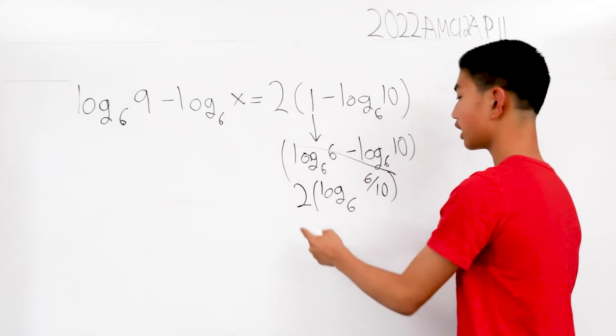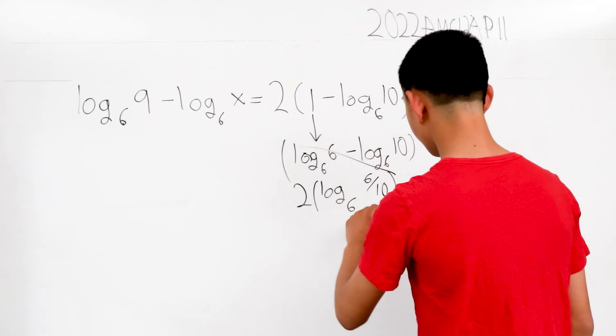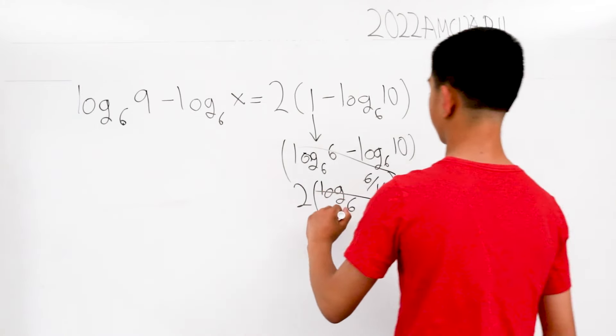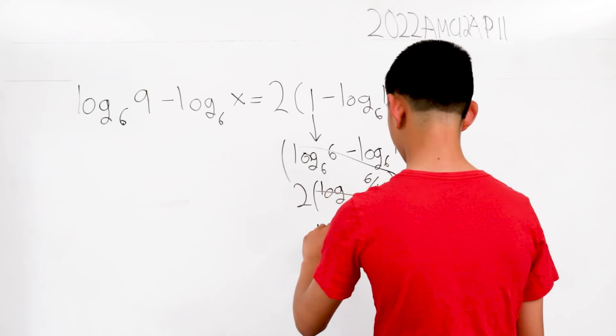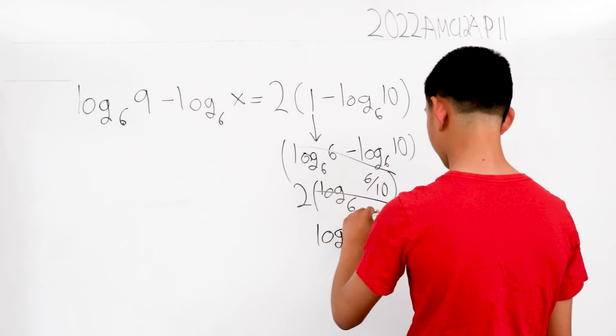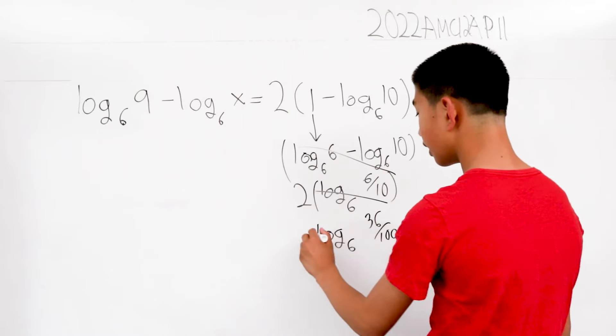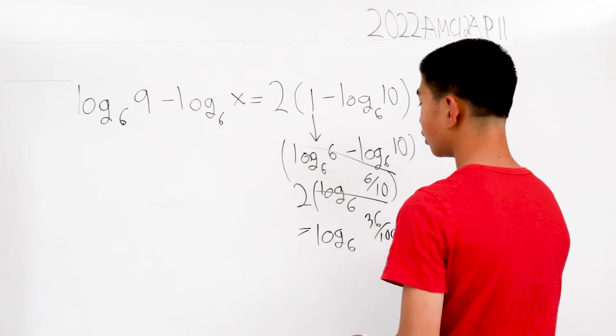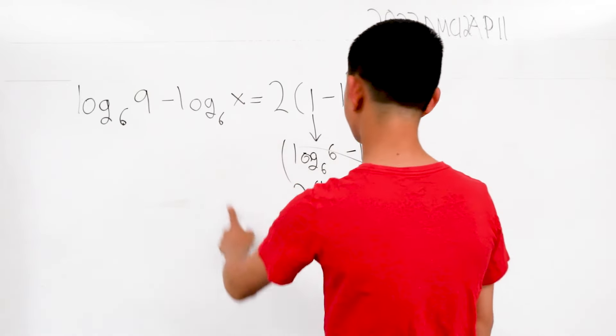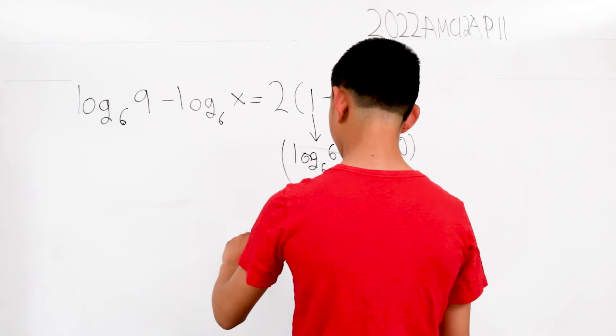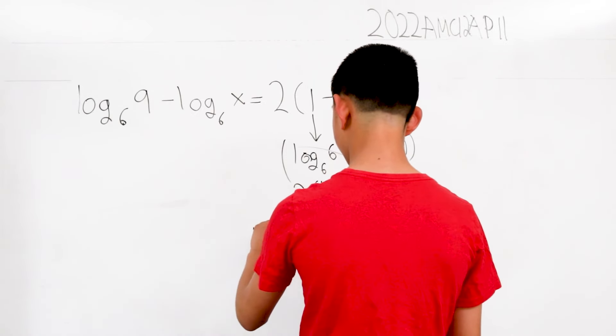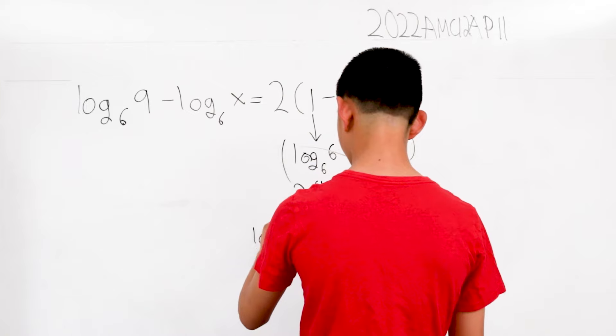We're multiplying it by 2 on the outside, so you square this inside. This is log base 6 of 36 over 100. This is equal to, well, we can apply the same divisive properties here. This is log base 6 of 9 over x.